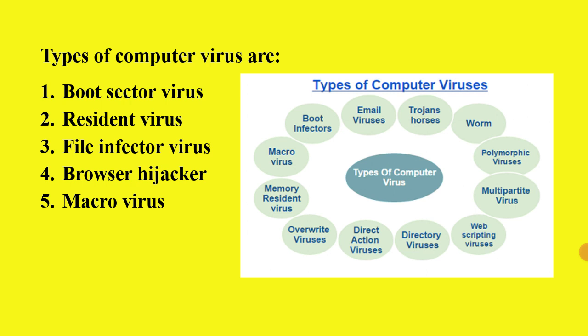So computer viruses are very dangerous for your computer system. Let's understand some types of computer viruses — you can see in the picture as well. Types of computer viruses: email viruses, Trojan horses, worms, polymorphic viruses, multipartite viruses, web scripting viruses, dictionary viruses, direct action viruses, overwrite viruses, memory resident viruses, macro viruses, and boot infectors viruses.